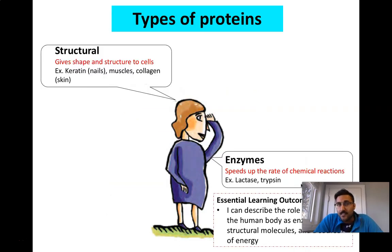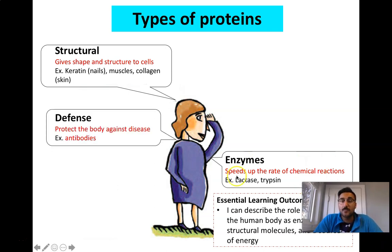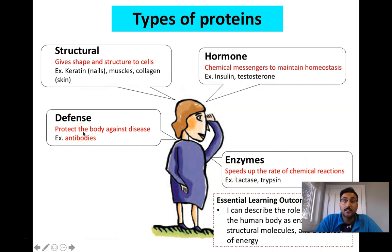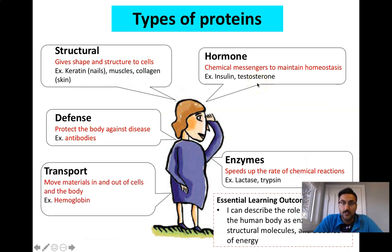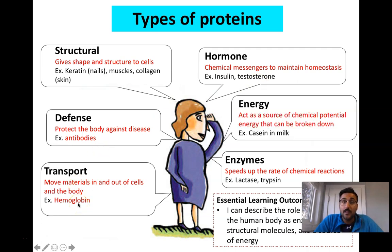There are different kinds of proteins: structural proteins, which give shape to cells and structures; enzymes, which speed up the rate of chemical reactions; defense proteins like antibodies; hormones, which are chemical messengers that maintain homeostasis — like insulin, testosterone, or estrogen; transport proteins like hemoglobin; and proteins that can act as a source of energy.